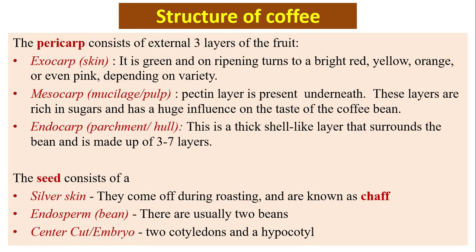Coffea liberica is of poorer quality than Coffea arabica and Coffea robusta. Regarding the structure of coffee, the pericarp consists of three external layers. The exocarp, or skin, is green and on ripening turns to bright red, yellow, orange, or even pink depending on the variety.